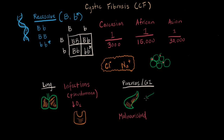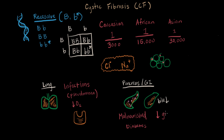Similarly, the liver secretes bile, but all the mucus in the ducts means the bile can't get out either. Bile helps us emulsify and digest fats. The pancreas also produces insulin, the chemical that regulates blood sugar, so with a lack of insulin these patients often have symptomatic diabetes — essentially type 1 diabetes because they can't produce insulin. With malnutrition, diabetes, and a lack of digestive enzymes combined, kids with CF often have trouble reaching their full stature, and their growth is usually restricted.